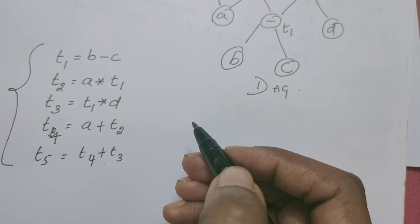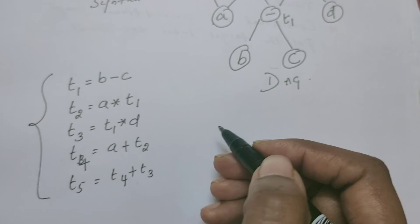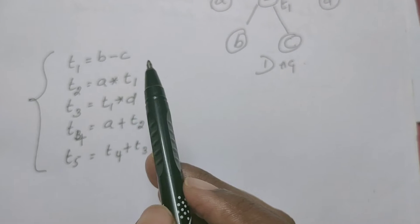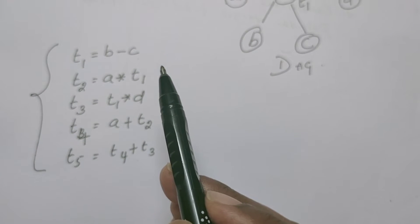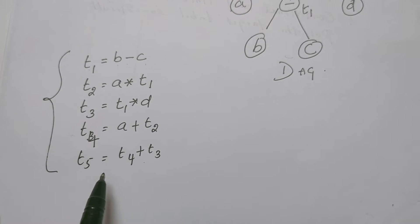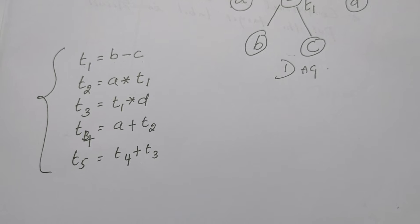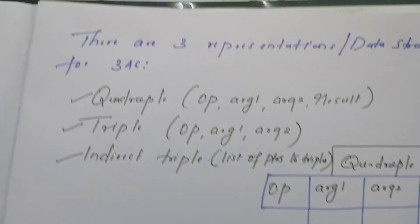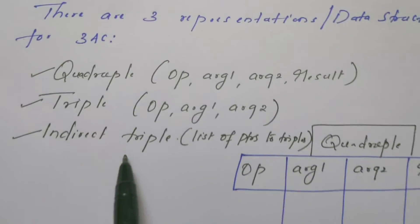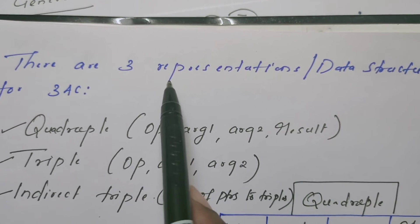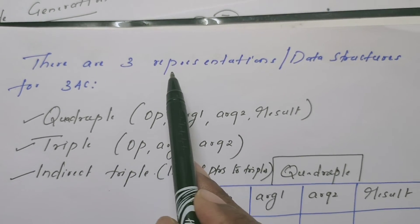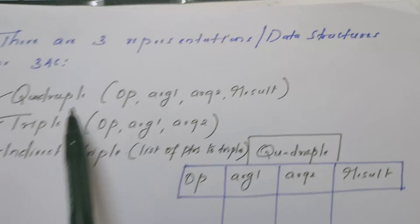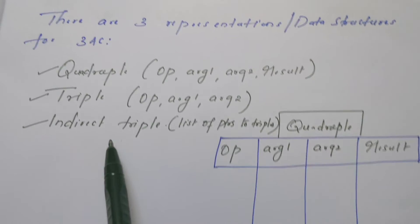In the next video, I will make a detailed introduction about three address code. In general, three address code contains at most three addresses and one operator. At most three addresses means it can have one address, two addresses, or maximum three addresses along with one operator. So for this three address code, we are going to see the different representations. There are three different representations of three address code: quadruple, triple, and indirect triple.